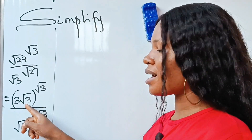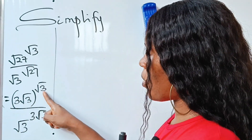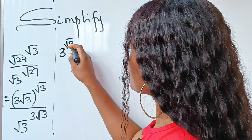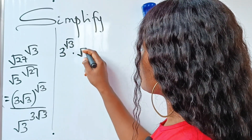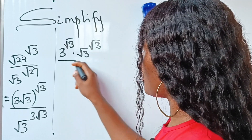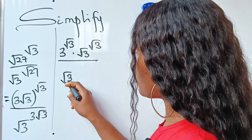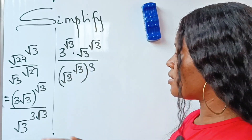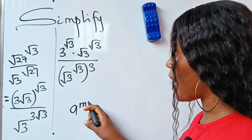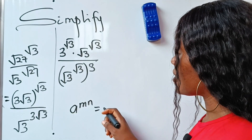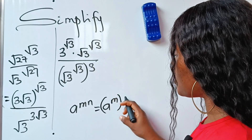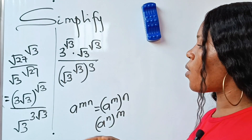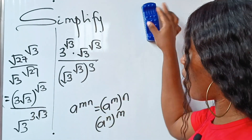Now when you have a power with two numbers inside the bracket, each factor is raised to that power separately. So we have 3 raised to the power of root 3, multiplied by root 3 raised to the power of root 3. This uses the rule: a to the power of m·n equals a^m raised to the power of n.